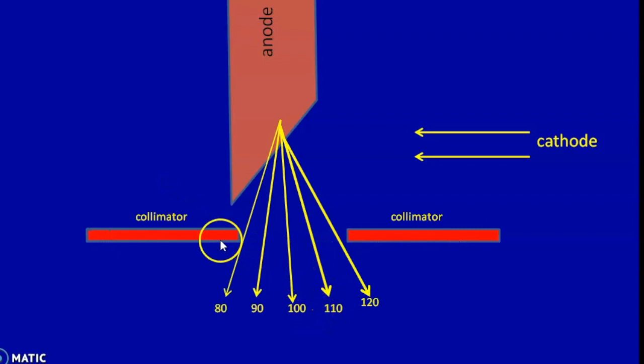Again, when the field size increases, the beam diversity that reaches the patient increases and anode heel effect becomes more pronounced.